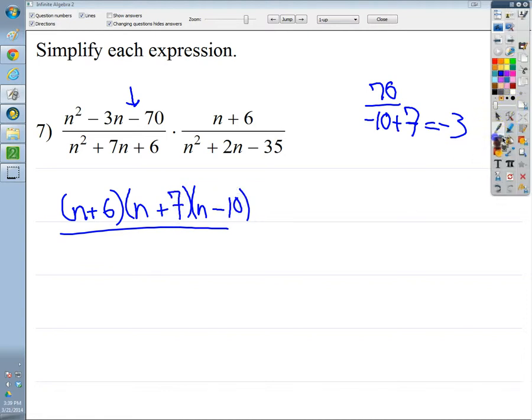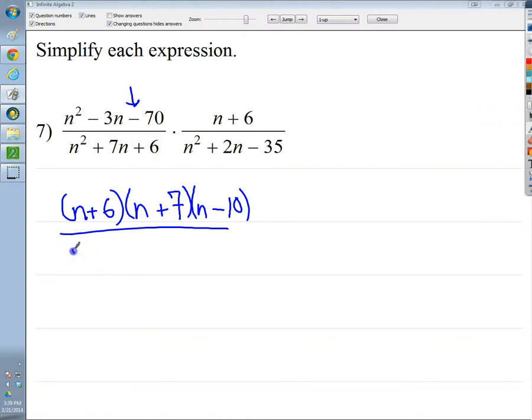So I need to put n plus and n minus because they're different signs. N plus 7, n minus 10. So now I have that part set up the way I like it, or the way that it'll actually work. For the next one, this plus before the 6 tells me that both signs are going to be the same. The plus in front of the 7 tells me they're both going to be plus. And I know that 6 plus 1 gives me 7, so I'm going to go ahead and put 6 and 1 there.